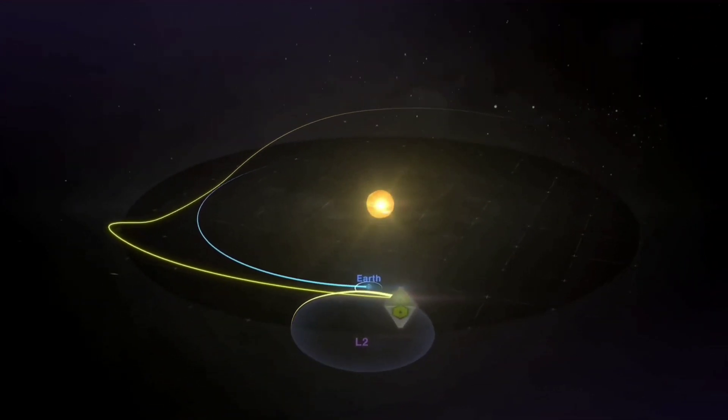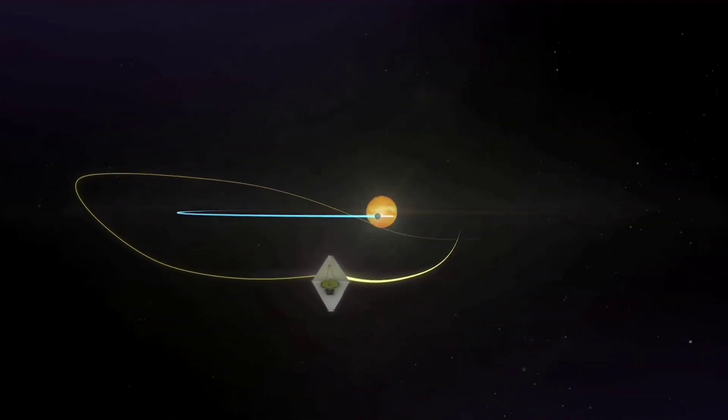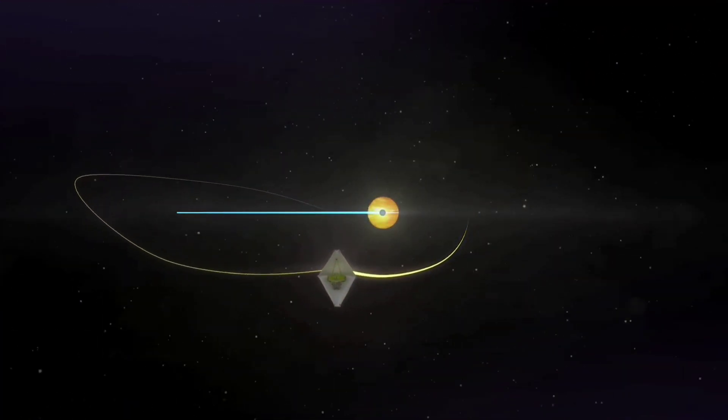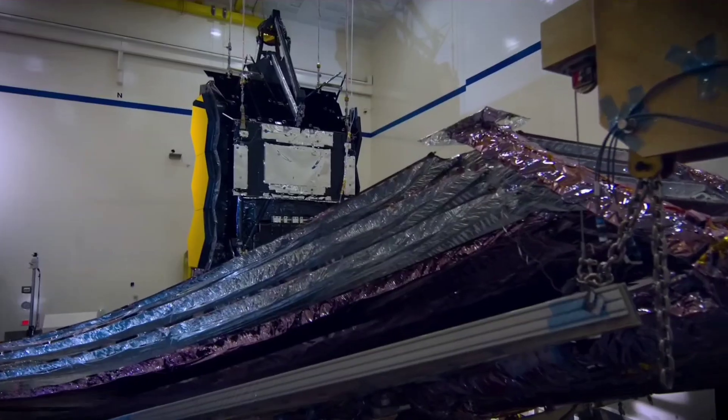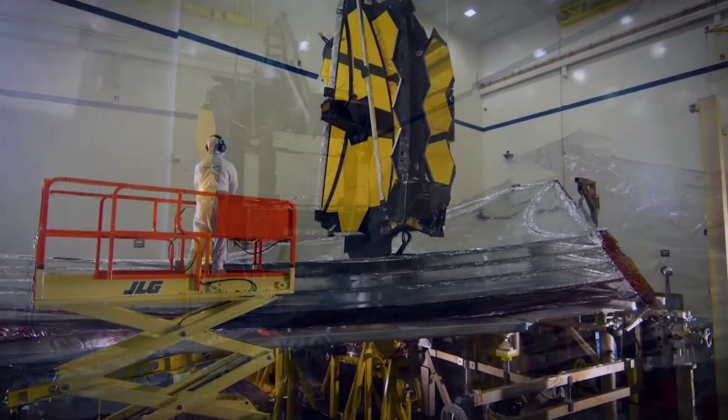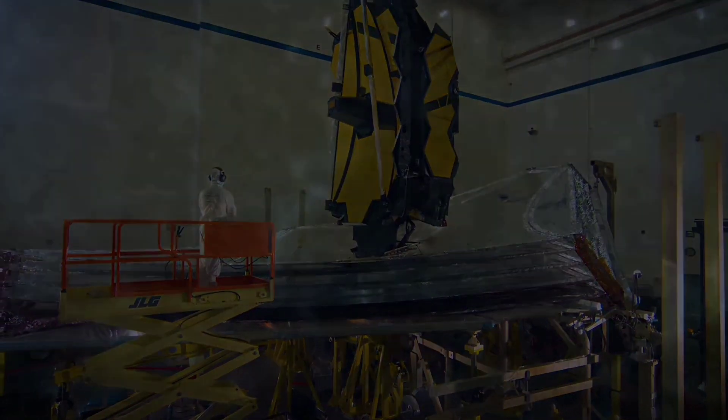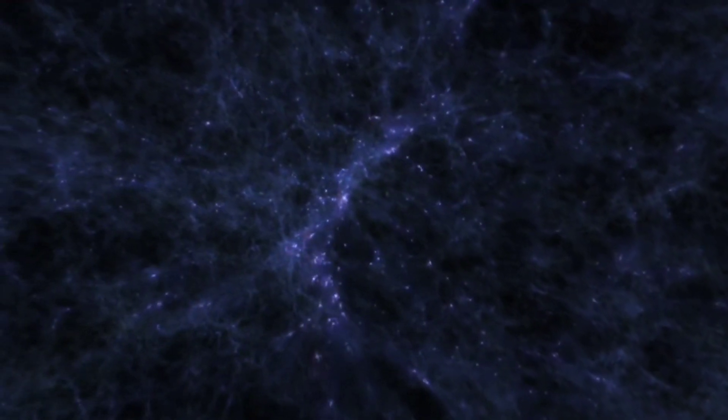The insertion into L2 orbit signifies the end of the observatory's immensely complex deployment process and the beginning of the telescope's commissioning activities. The orbit insertion maneuver began at 2 p.m. EST, lasted for 5 minutes, and added 1.6 meters per second velocity to Webb to send it into its proper orbit.